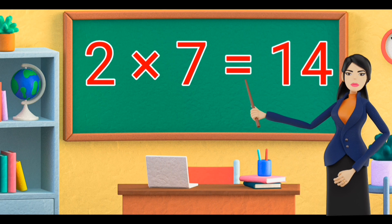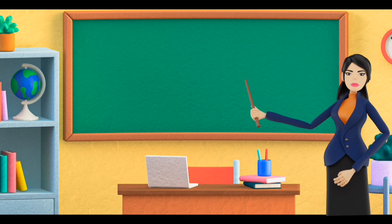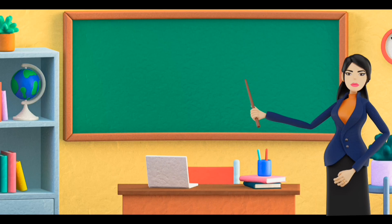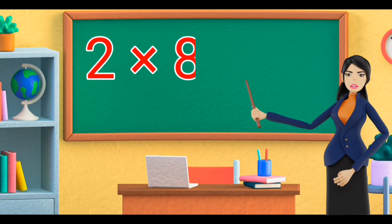Two sevens are fourteen. Two sevens are fourteen.